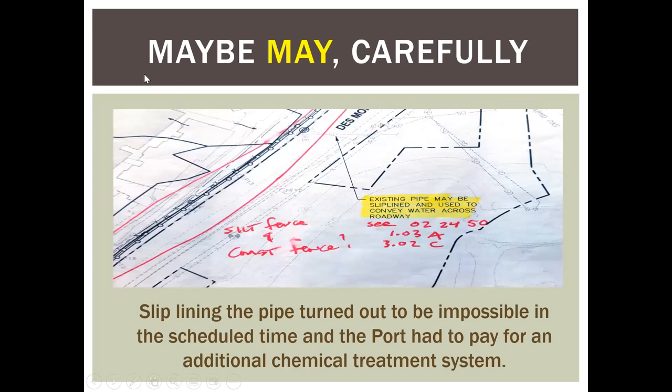You can use the word 'may' occasionally but be very careful. On one contaminated site project, we said on the plan sheets that an existing storm pipe under the highway 'may' be slip-lined and used to convey water across the roadway, so the contractor wouldn't have to have a treatment system on the left side. It wasn't possible, and the contractor said, 'What do you want me to do with the water on the left side?' The contract owner owned that problem because we said 'may.' We ended up paying around $100,000 for another treatment system. Can't stress enough — be careful using that word.